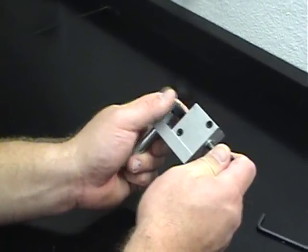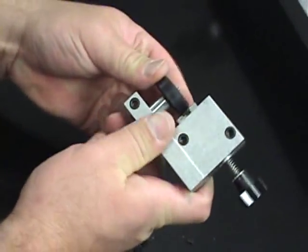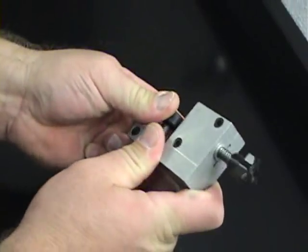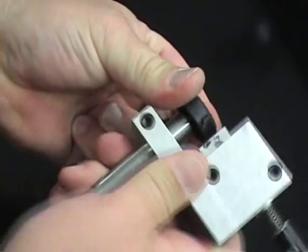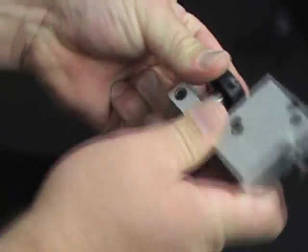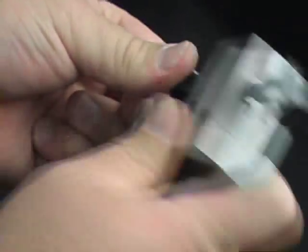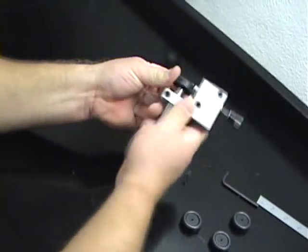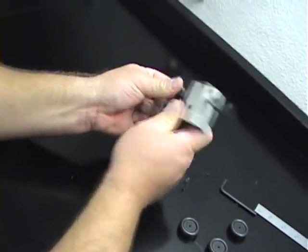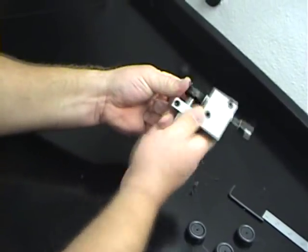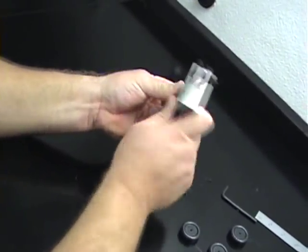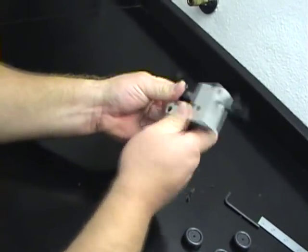Once we begin to establish roundness with the tool, moving brisk short strokes around the wheel. Once we have established that the wheel is round, the cuts will get lighter and fluffier as we close in on the final cuts.